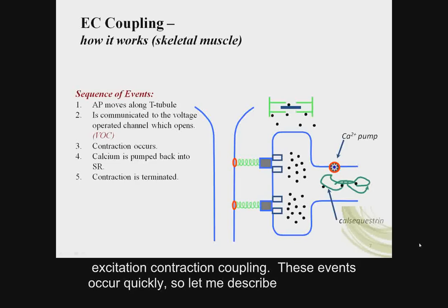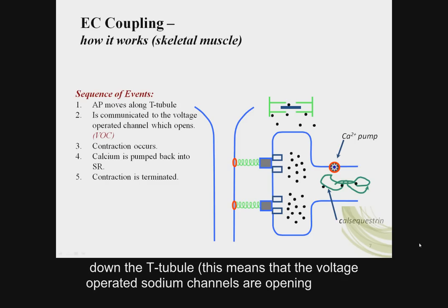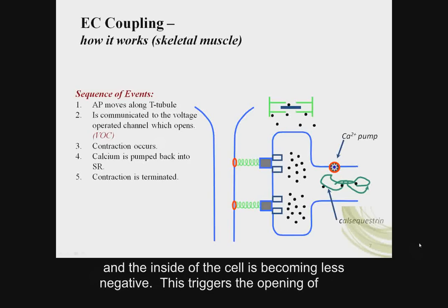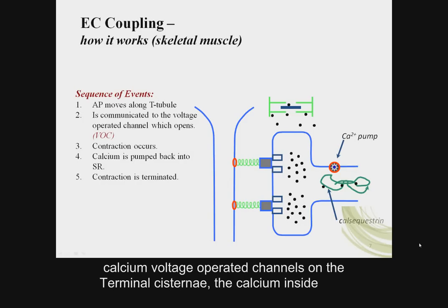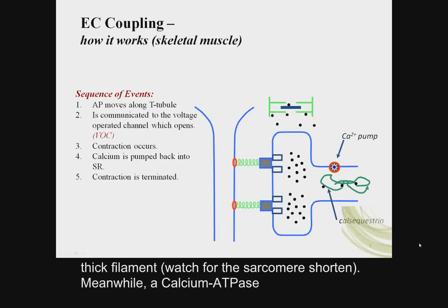These events happen quickly, so let me describe them. First, an action potential travels down the T-tubule, meaning voltage-operated sodium channels are opening and the inside of the cell is becoming less negative. This triggers the opening of calcium voltage-operated channels on the terminal cisternae. The calcium inside is released and can now lead to the thin filaments sliding across the thick filament — watch for the sarcomere to shorten. Meanwhile, a calcium ATPase uses active transport to pump the cytosolic calcium back into the sarcoplasmic reticulum to terminate contraction.